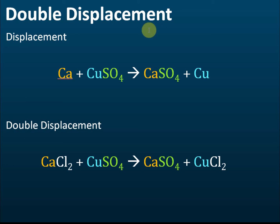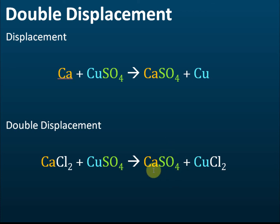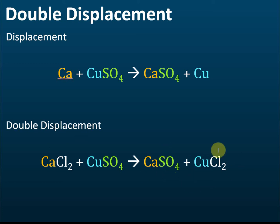We use this double displacement reaction to prepare insoluble salt — it is the only reaction we can use. To prepare calcium sulfate, you must have one solution containing calcium ions and another solution containing sulfate ions. When these two solutions react, double displacement occurs and calcium sulfate — the insoluble salt — is formed as a solid, along with another solution like copper chloride.